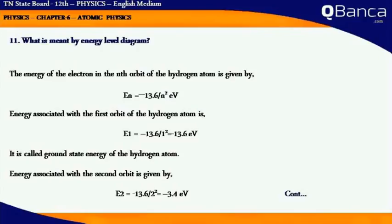What is meant by energy level diagram? The energy of the electron in the nth orbit of the hydrogen atom is given by En = -13.6/n² eV. Energy associated with the first orbit of the hydrogen atom is